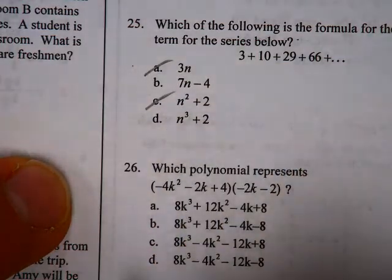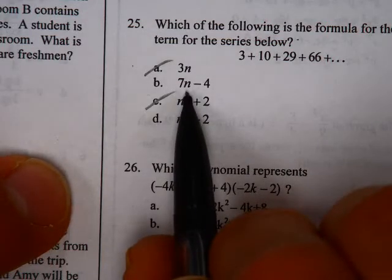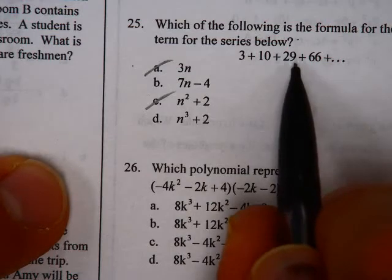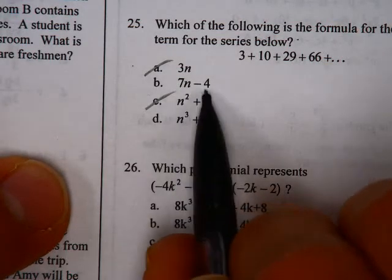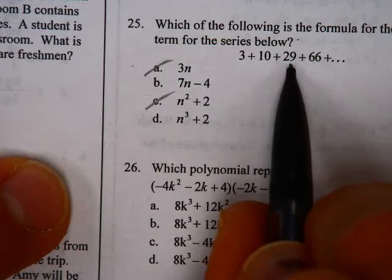It doesn't seem to be linear, so that would seem like it would eliminate b as a possibility, although it did work for the first two, one and two. But plug in three and see what happens. Three times seven is 21, minus four is 17, so that doesn't work any longer.